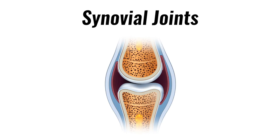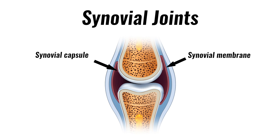Synovial joints are by far the most common classification of a joint within the human body. They are highly movable and have a synovial capsule surrounding the entire joint, a synovial membrane which secretes synovial fluid to lubricate the joint, and cartilage known as hyaline cartilage which protects the ends of the articulating bones.